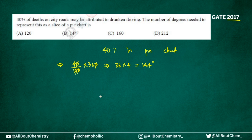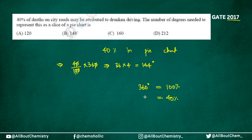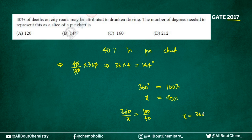This is one way. The alternative way: 360 degrees is equivalent to 100 percent. So 40 percent is equivalent to how many degrees? Divide them: 360 over x equals 100 over 40, cross multiply and solve. x equals 360 times 40 divided by 100. Again, you get the same value — 144.